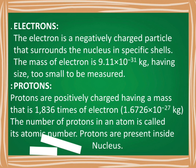The next particle is the proton. Protons are positively charged particles present inside the nucleus of an atom. They have 1836 times the mass of an electron, which is equal to 1.6726 × 10⁻²⁷ kg. The number of protons in an atom is called the atomic number. Protons and neutrons are found inside the nucleus and are collectively known as nucleons.